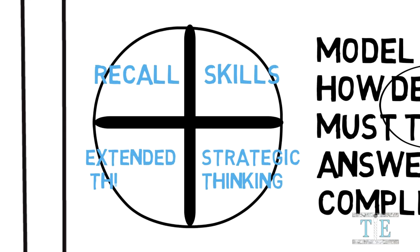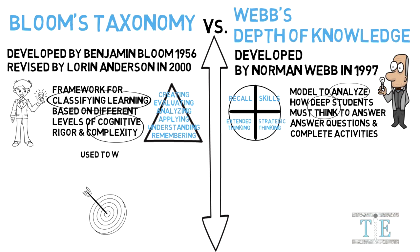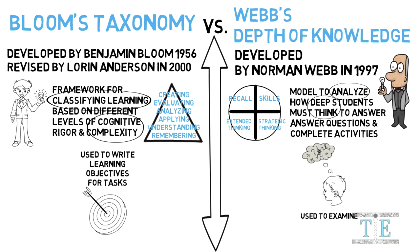Bloom's Taxonomy was created with a purpose for educators. It is intended to be used to write learning objectives for tasks. Webb's Depth of Knowledge, on the other hand, aims to evaluate the thinking process. It is used to examine how deep a student learns the material.